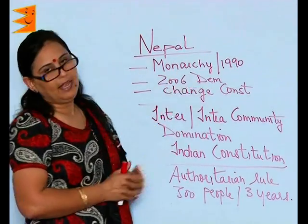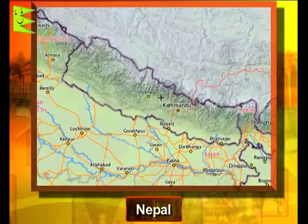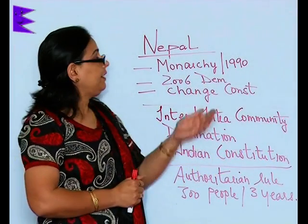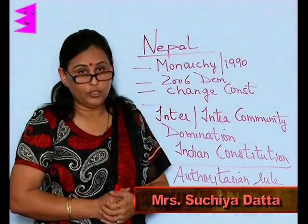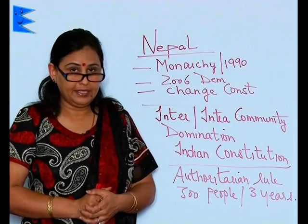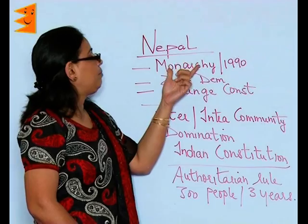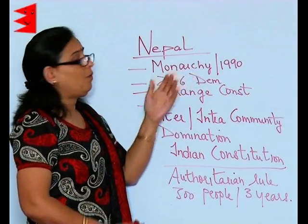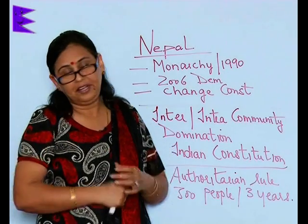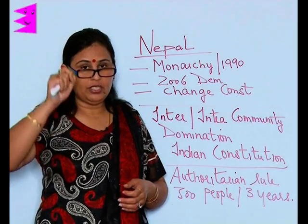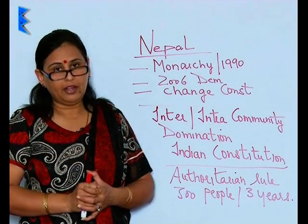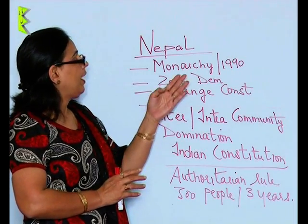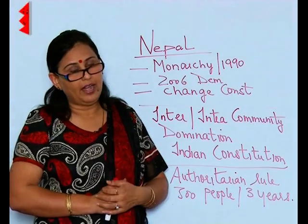Let's take an example of a neighboring country, Nepal. Nepal was a country under a king's rule, that is monarchy. Till 1990, they had a constitution — a new constitution adopted in 1990 — which clearly stated that the monarch along with his council of ministers shall head the country. The monarch was all in all; he was authoritative in nature. The Constitution clearly defined that the monarch was the representative of God on earth.